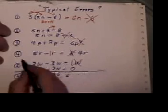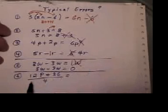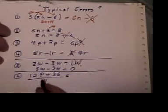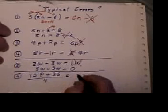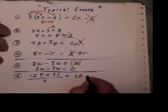And the last typical error made, people will do 12p plus 36, and they'll do the 4 into the 12, and they'll say the answer is 3p plus 36.